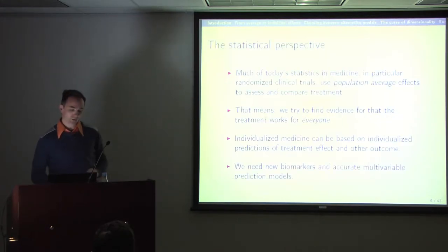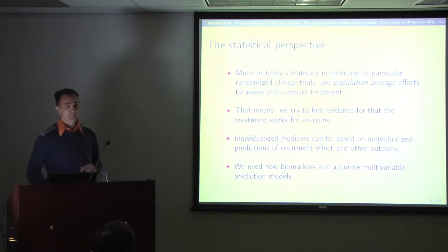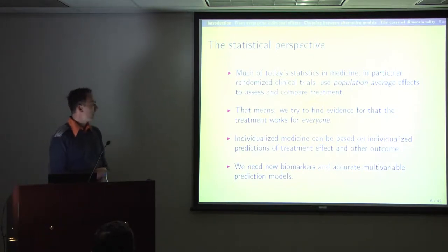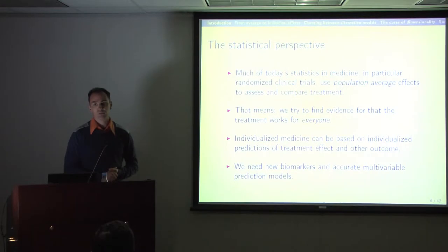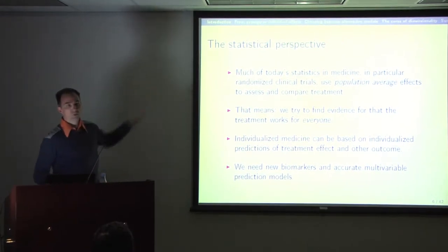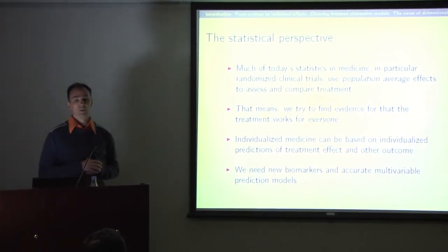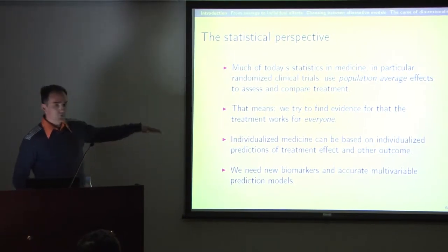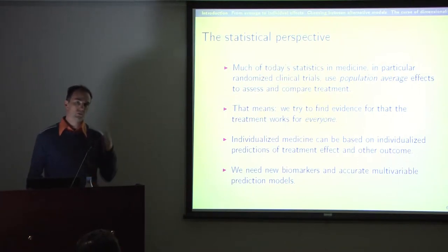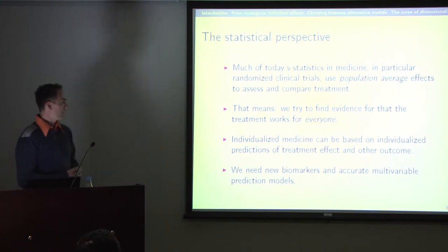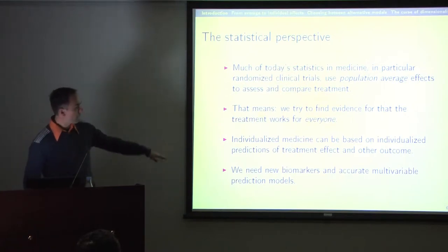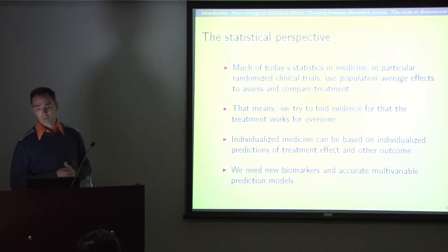I call this talk a statistical perspective, so I will focus on the statistical aspects. Looking back at clinical trials, statisticians have a good understanding of how to analyze randomized clinical trials, mainly estimating population average effects. Our models assume the treatment effect is independent of all other factors. As opposed to that, individualized medicine requires a prediction for the individual person, taking into account all measurable factors and new biomarkers to make prediction models more accurate.